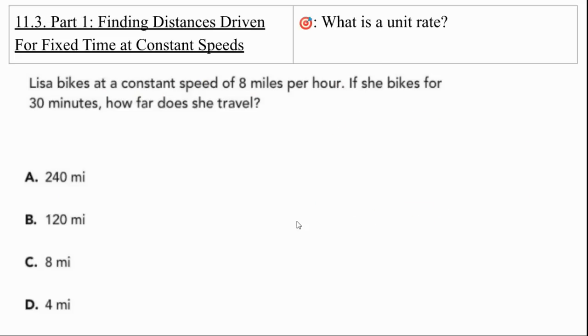Lisa. Oh hey, they made this one about me. Lisa bikes at a constant speed of 8 miles per hour. If she bikes for 30 minutes, how far does she travel? So we look at our choices.